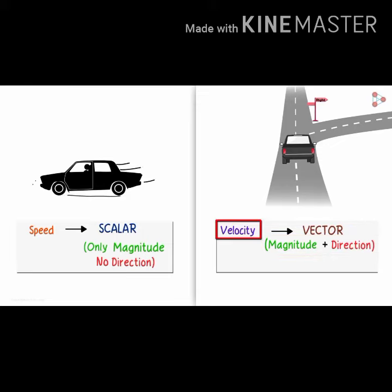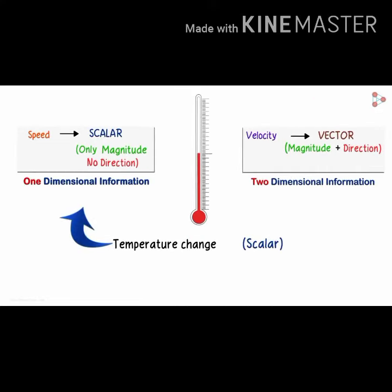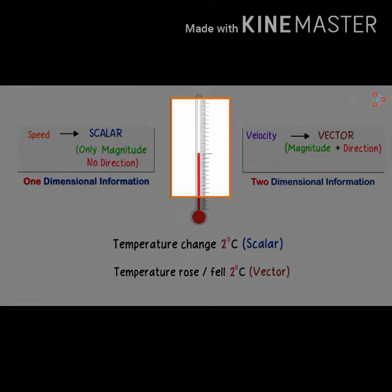The additional information makes it more specific. Temperature change, for example, is a one-dimensional quantity. But when we specify rise or fall in temperature, it becomes two-dimensional. If someone says that the temperature has changed by two degrees, we won't really know if it has increased or decreased.